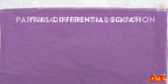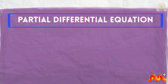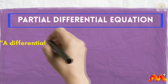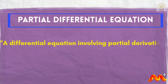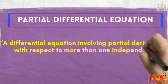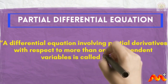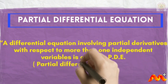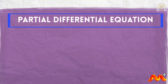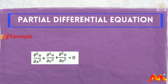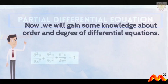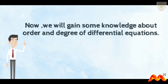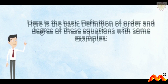The second type is a partial differential equation (PDE). A differential equation involving partial derivatives with respect to more than one independent variable is called a PDE. For example: ∂²u/∂x² + ∂²u/∂y² + ∂²u/∂z² = 0.